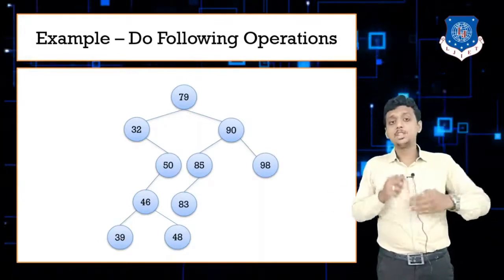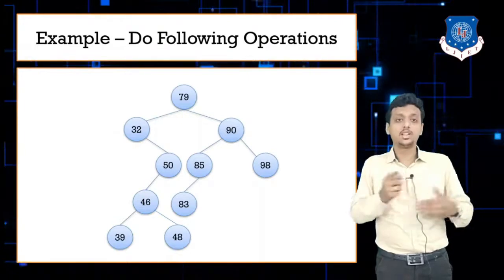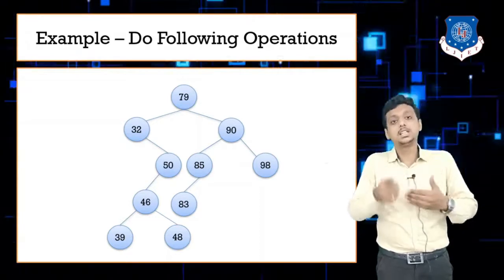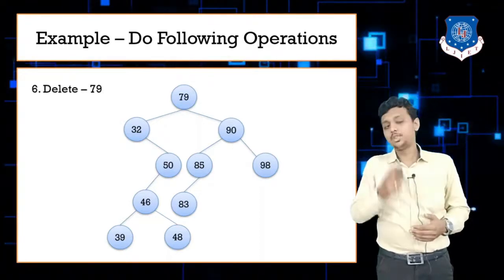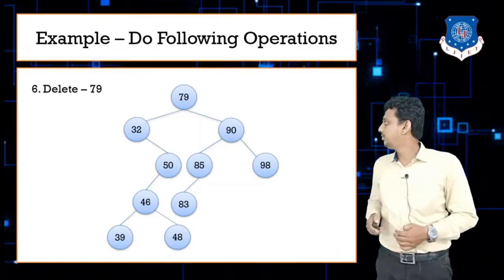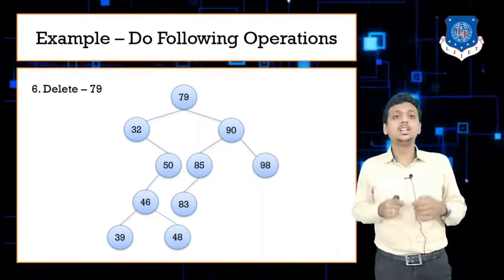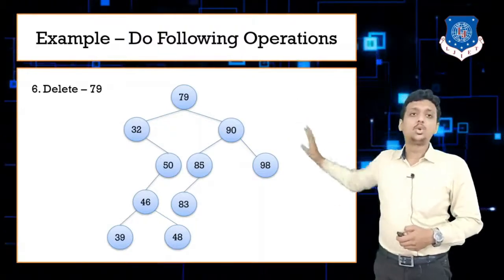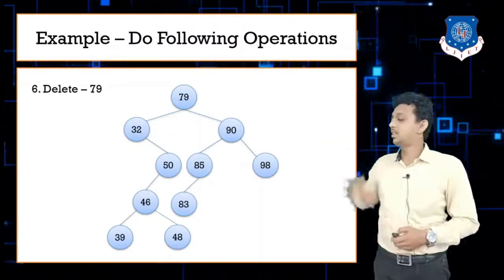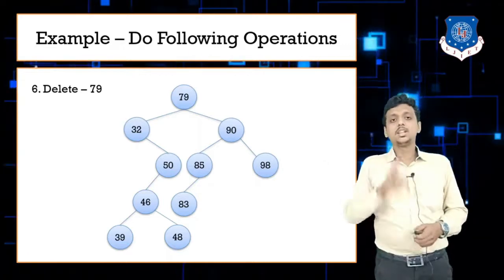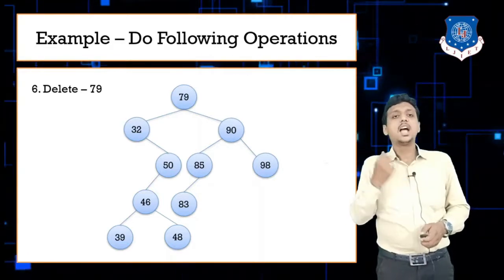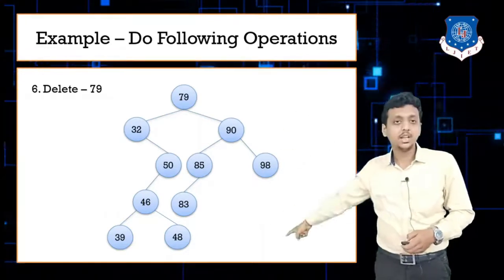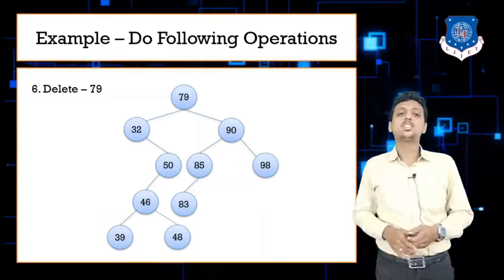Operations are being performed consecutively in sequence: insert, insert, insert, then delete, delete. The next operation is delete 79 — the root node. This is case three, where we need to select the greatest value from the left subtree of 79 or the smallest value from the right subtree of 79. I will show two different answers for this operation.